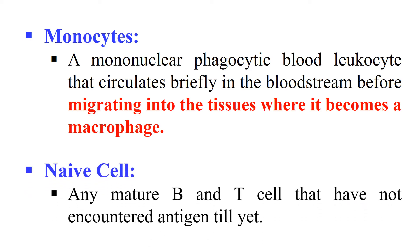Next, Naïve Cell — also one of the important terms. A naïve cell is any mature B or T cell which has not encountered any antigen yet. It is simply a fresh B or T cell which has not bound to any antigen. That cell is known as a naïve cell.